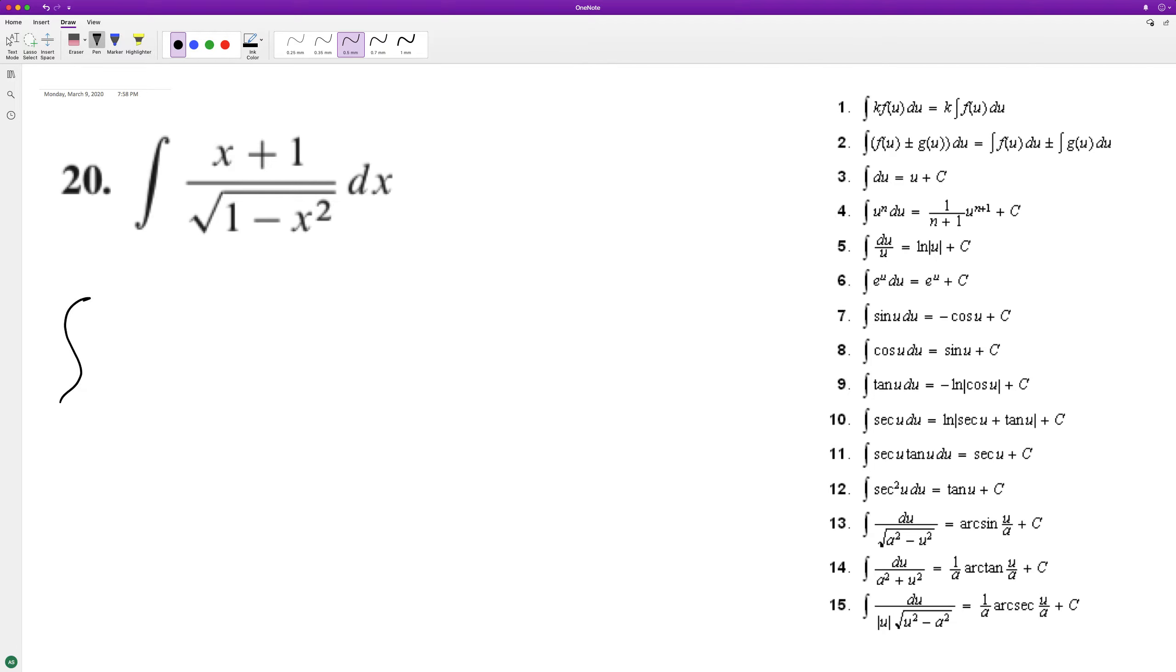We can break this up into the integral of x - so I'm breaking up the numerator - and we're gonna have, well, it's the same denominator in both of them, so plus 1 over square root 1 minus x squared.